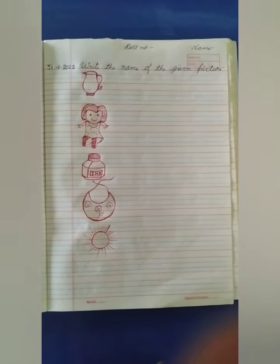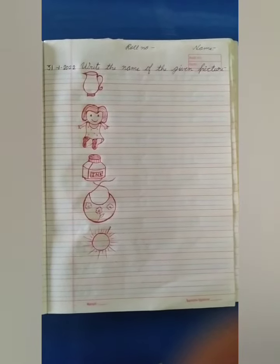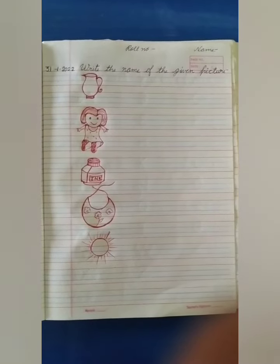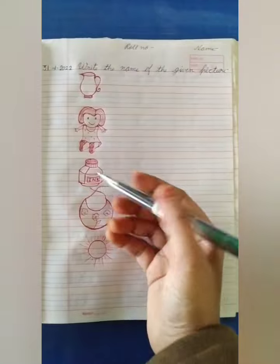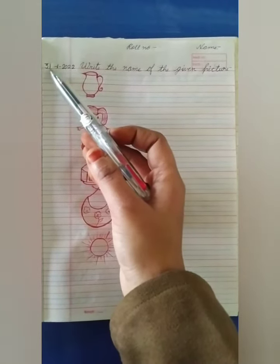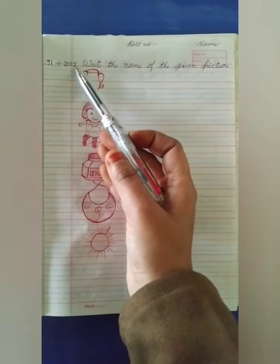Hello kids, a very good morning to all, myself Shikha. You know, it is your English class, so take out your English copy and mention today's date. Which date is today? Today is 31 January 2022.